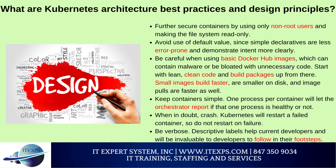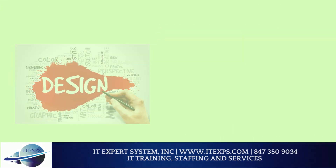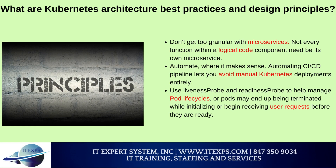Further secure containers by using only non-root users and making the file system read-only. Avoid use of default values, since simple declaratives are less error-prone. Be careful when using basic Docker Hub images, which can contain malware or be bloated with unnecessary code — start with lean, clean code and build packages from there. Small images build faster, are smaller on disk, and pull faster. Keep containers simple: one process per container lets the orchestrator report if that process is healthy. When in doubt, crash — Kubernetes will restart a failed container, so do not restart on failure. Use descriptive labels. Do not get too granular with microservices. Automate where it makes sense, letting CI/CD pipelines avoid manual Kubernetes deployments. Use Liveness Probe and Readiness Probe to help manage pod life cycles.